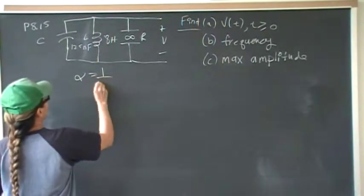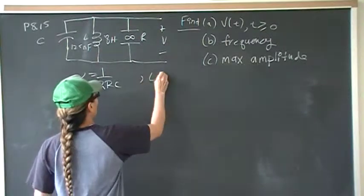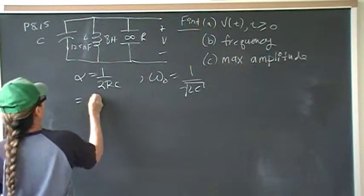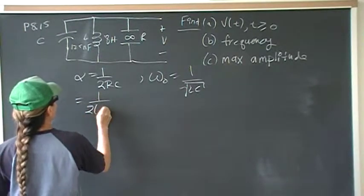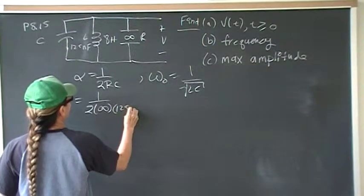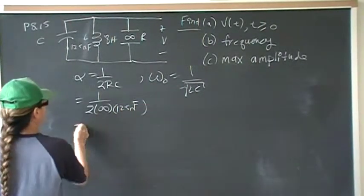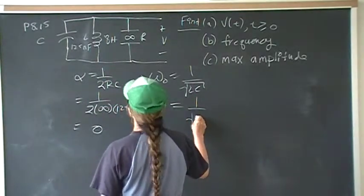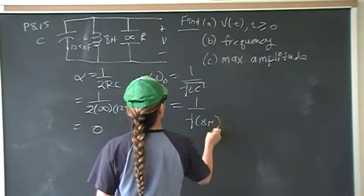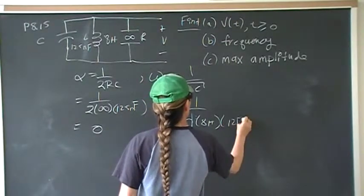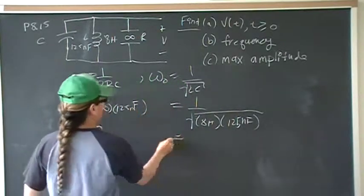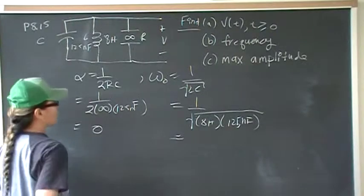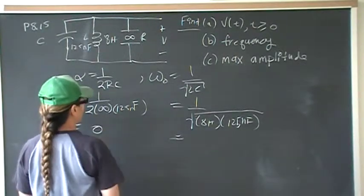So we have alpha is equal to 1 over 2RC. Omega naught is 1 over root LC. So here we have 1 over 2 times infinity times 125. Well, it doesn't even matter what it is because this is zero. So omega naught is greater than alpha, which means underdamped.